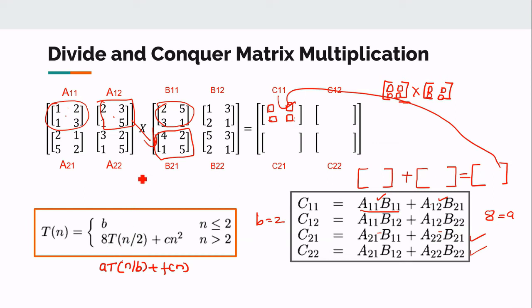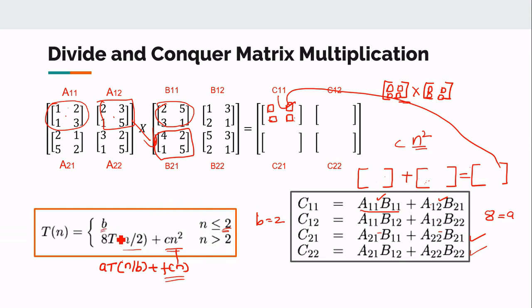The recurrence relation for matrix multiplication using divide and conquer is 8·T(n/2) + F(n). F(n) is the cost of combining results, which is adding two matrices. Since matrix addition has complexity O(n²), F(n) equals cn².